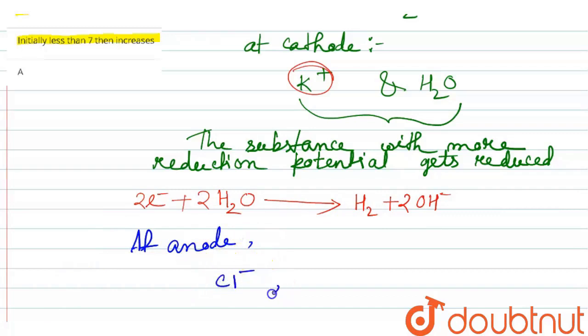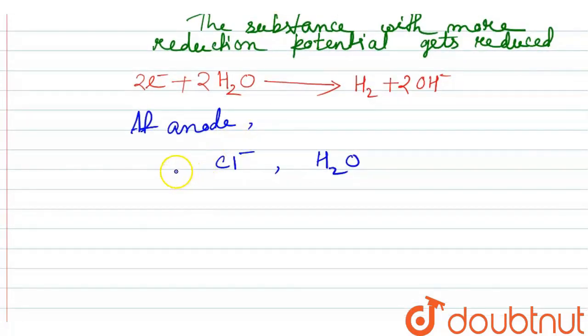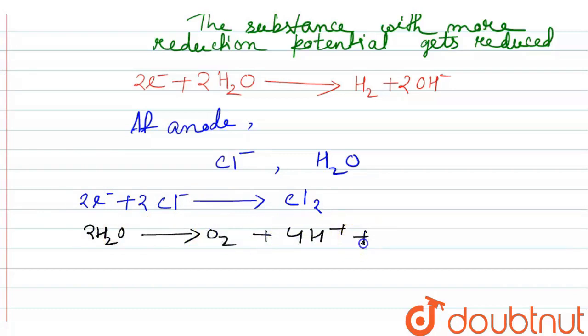At anode, competition occurs between Cl- and water. We may have reactions like either 2Cl- forming Cl2 plus 2 electrons, or 2H2O forming O2 plus 4H+ plus 4 electrons. Either this reaction or that reaction. But thermodynamically, oxygen is formed.